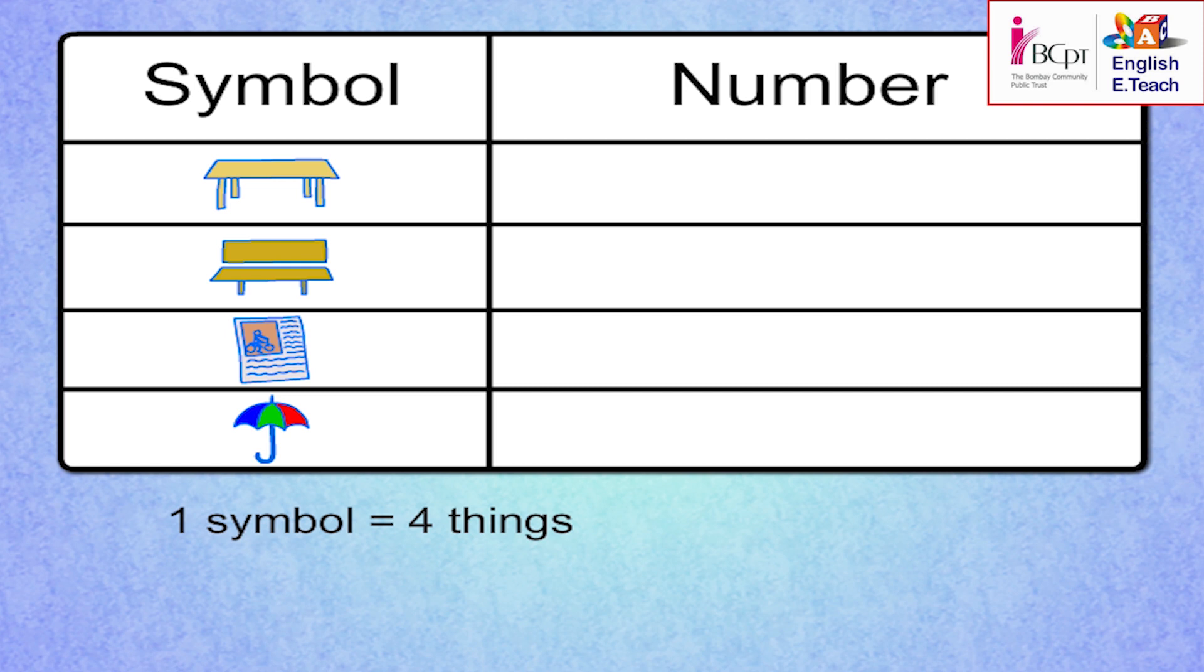Priya, how many symbols will you use for the tables in the classroom? There are 16 tables in all. If one symbol stands for four tables, we need four table symbols on the chart to show four times four, sixteen tables. Excellent, Priya.